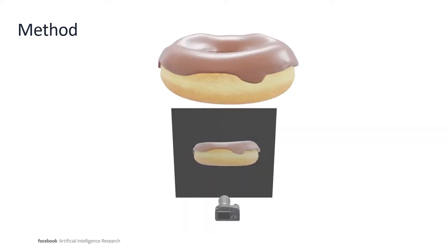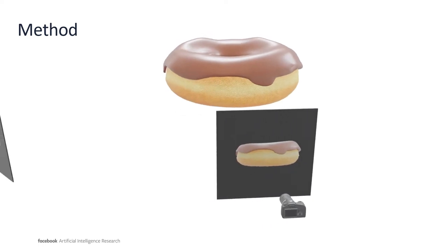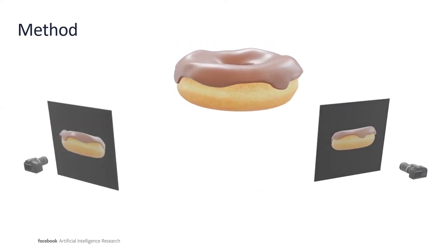To overcome this issue, we propose our novel warp-conditioned ray embedding as explained next. Given one or multiple views of an object, our method reconstructs the corresponding shape and appearance in form of a neural radiance field.